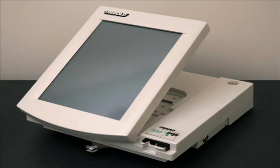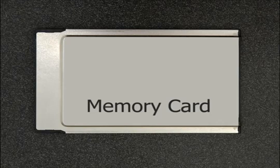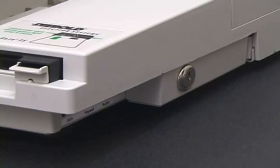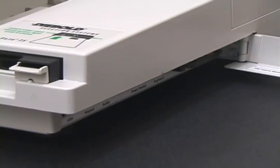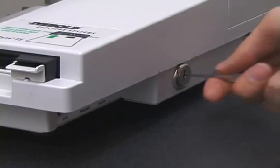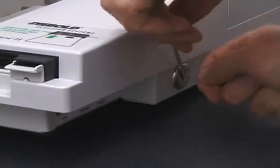This vote-stealing attack requires injecting malicious software into the voting machine. Anyone who has access to a voting machine for a few minutes can install malicious code. Here is one way to do so. In advance, we prepare a memory card containing our malicious software. When we get a few minutes alone with the machine, we first open the side door. We can do this with a key. There are thousands of keys in circulation, and any hardware store will copy them. Even without a key, the lock is easily picked. One member of our team can consistently pick the lock in less than 10 seconds.